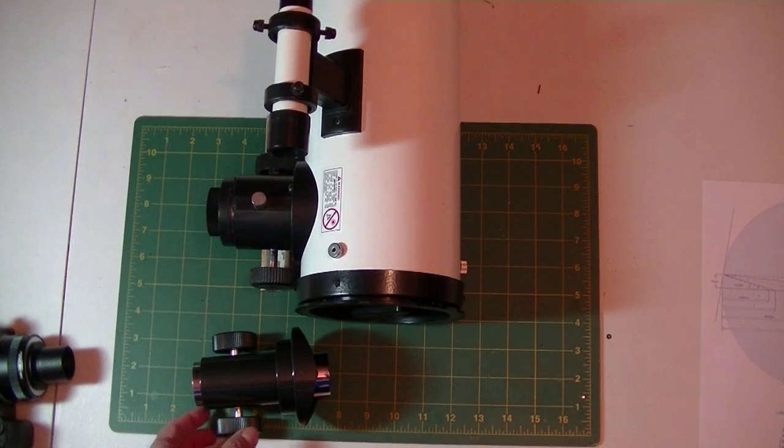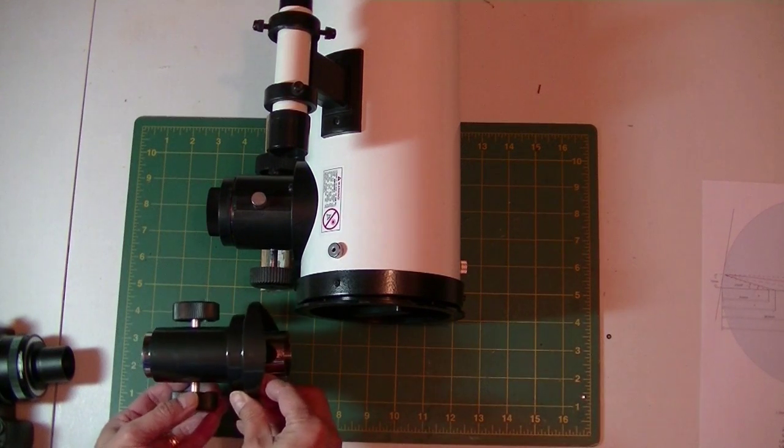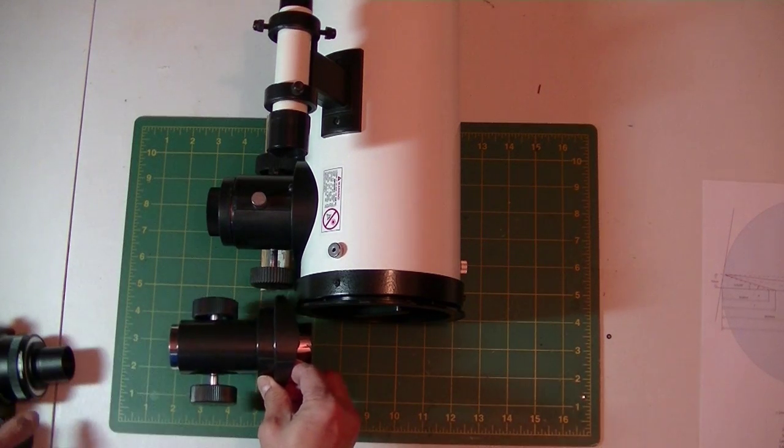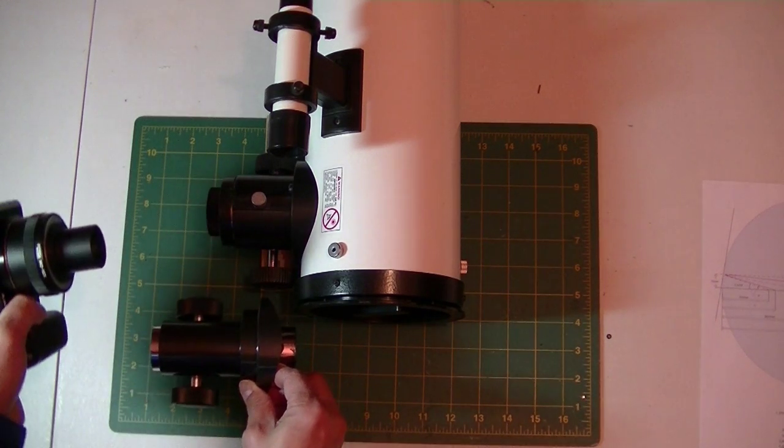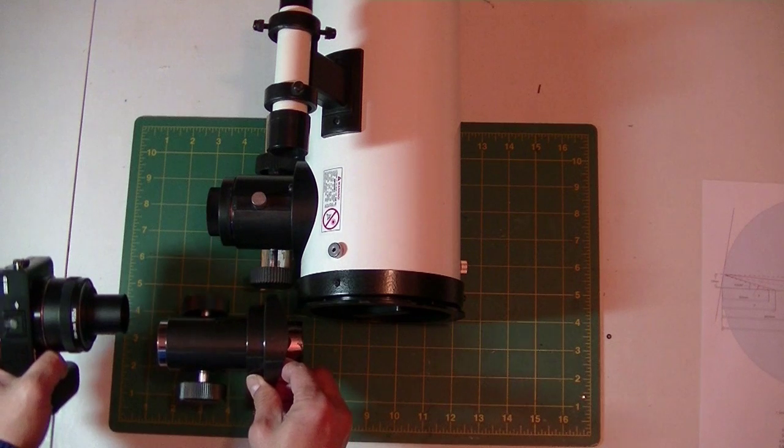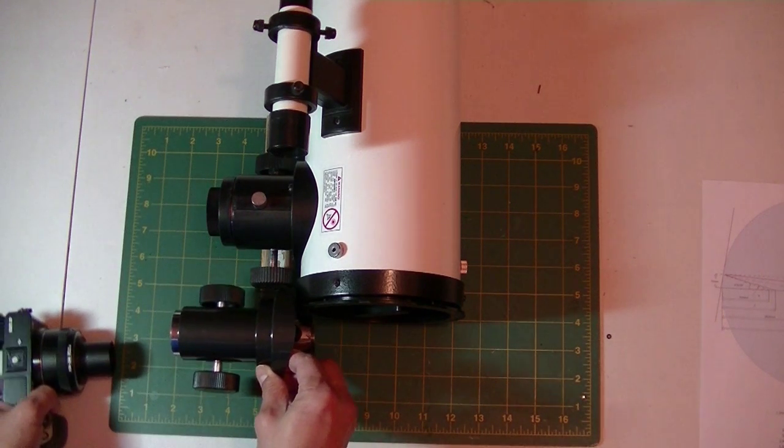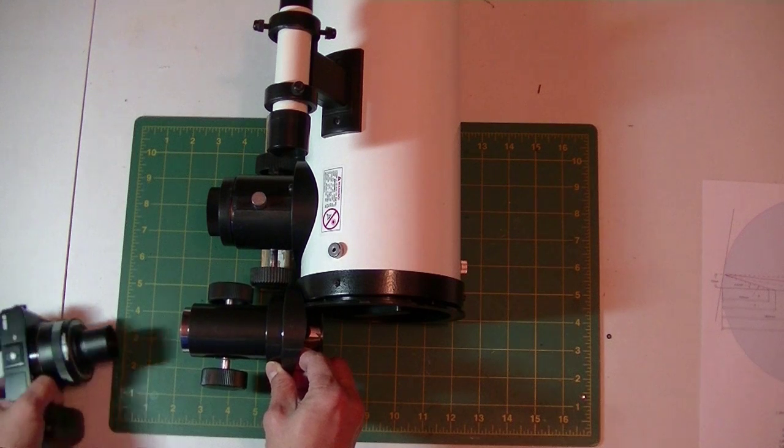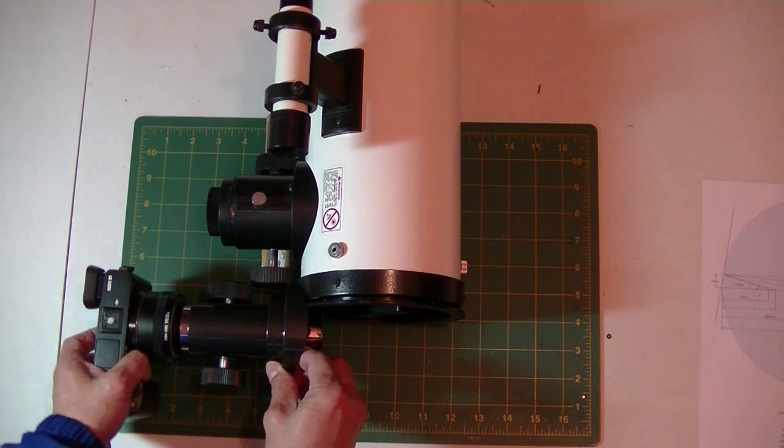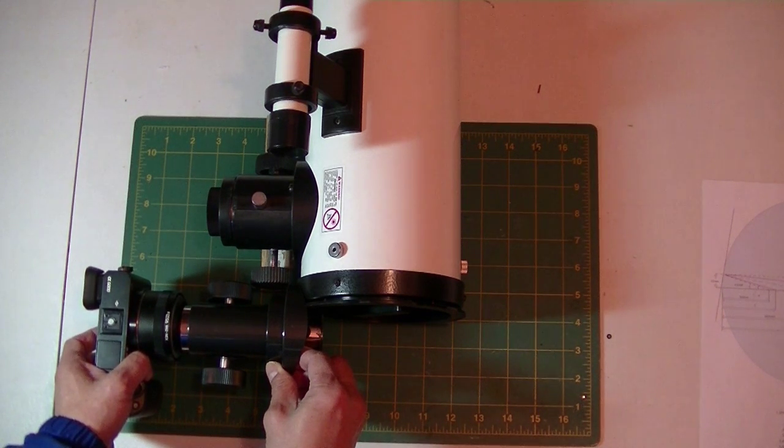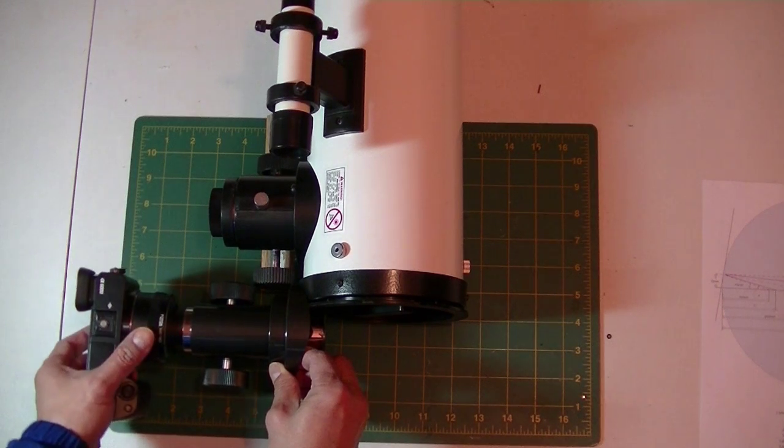Last time I changed the focuser to make it take my 1.25 inch T-ring adapter. However, later I found out when I put everything there, it was still not close enough to get my camera to the focal point.